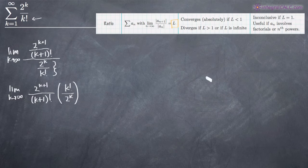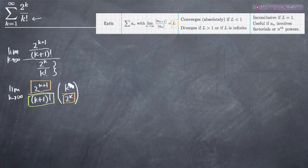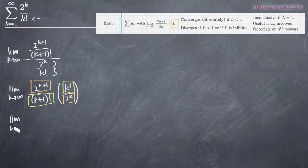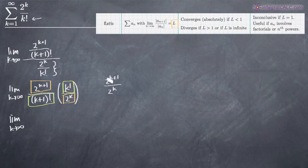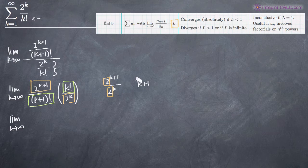Now we can simplify by grouping terms together. We'll look at 2 to the k plus 1 and 2 to the k together, and then k plus 1 factorial and k factorial together. For 2 to the k plus 1 divided by 2 to the k — when the bases are the same, we subtract the exponent in the denominator from the exponent in the numerator. So we get k plus 1 minus k, the k's cancel, and we're left with 2 to the 1st power — just 2 — in the numerator.